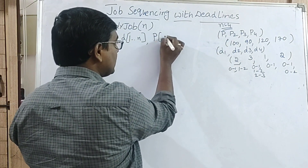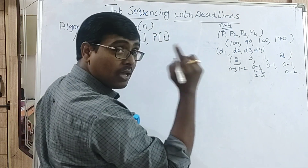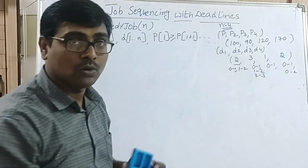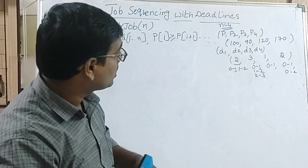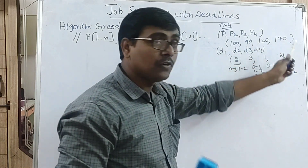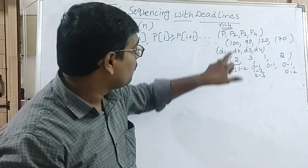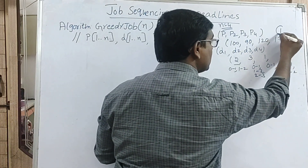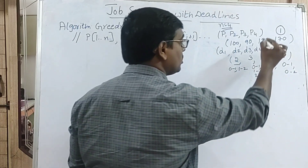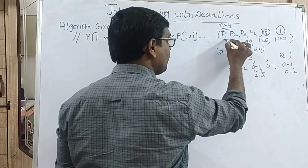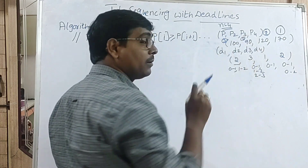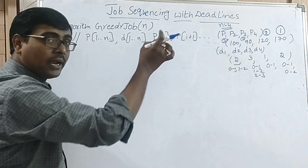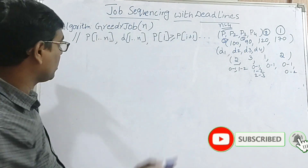First, arrange the jobs in descending order of their profits. That means we first consider the job with the highest profit, then the next highest, and so on. Among our four jobs, the job with profit 170 is the first executable job, 120 is second, 100 is third, and 90 is fourth.